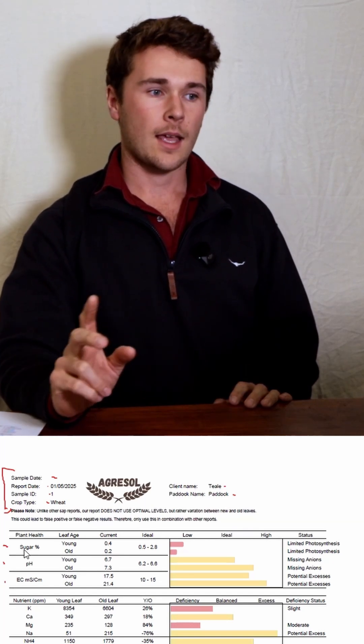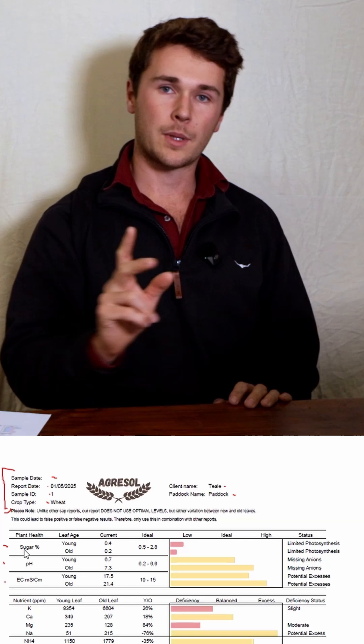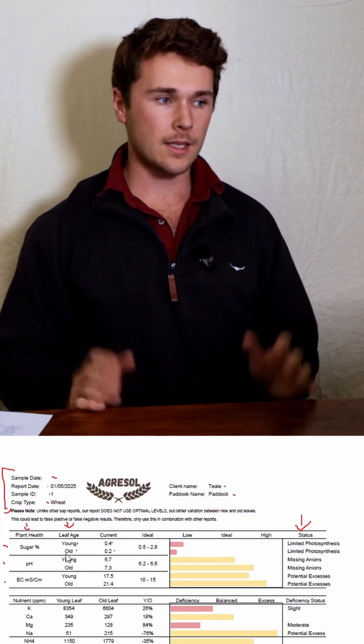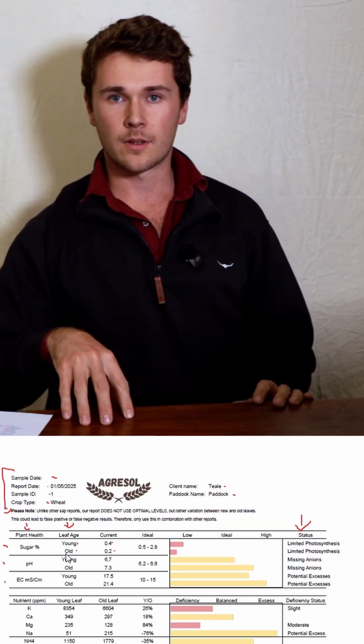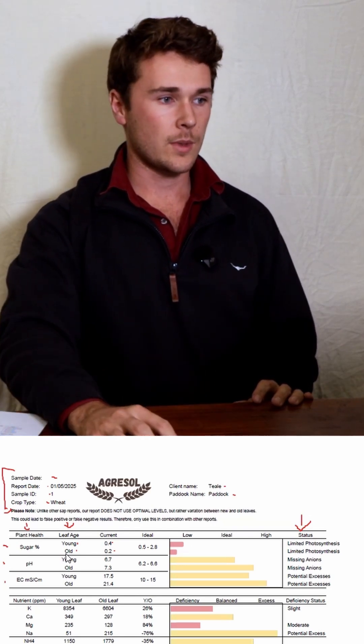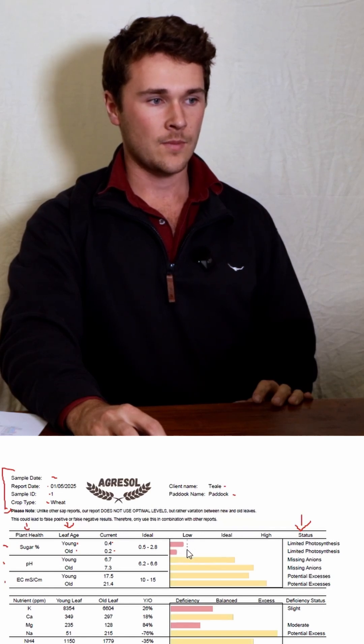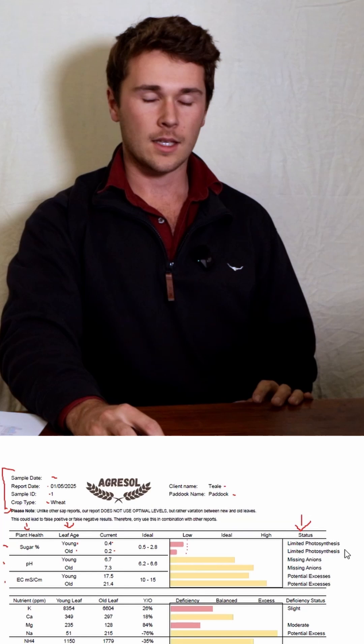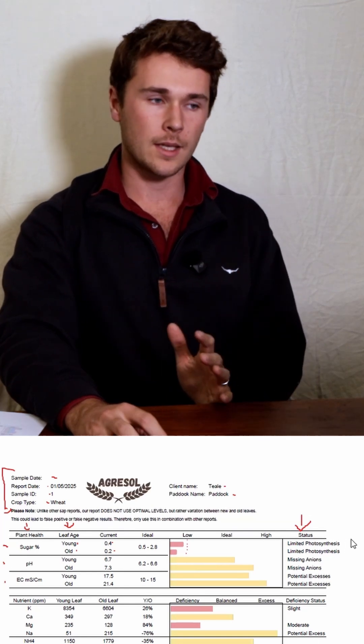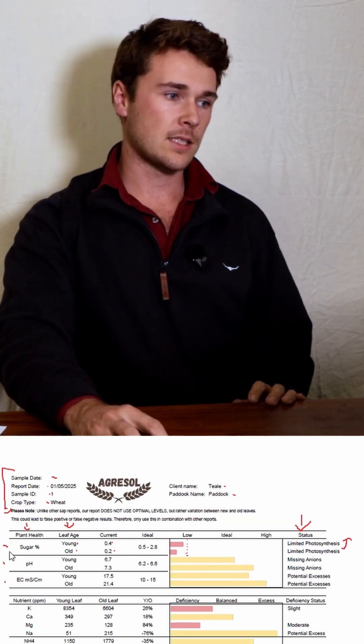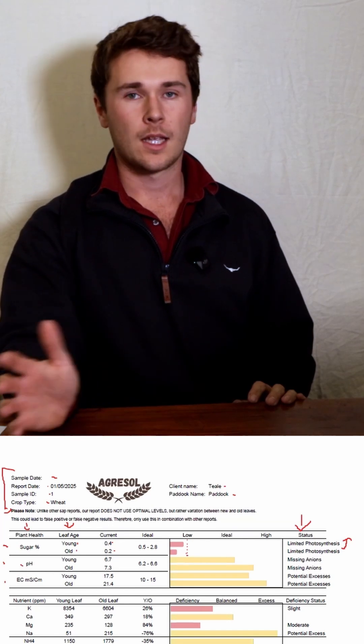The photosynthetic ability of the plant and the ability to translocate and utilize those sugars. It's a feedstock for everything in the plant and comes from the most important process, photosynthesis. When the plant is too low in sugar production, as you can see here, it means photosynthesis is off, which is likely a mineral deficiency. Next is pH.